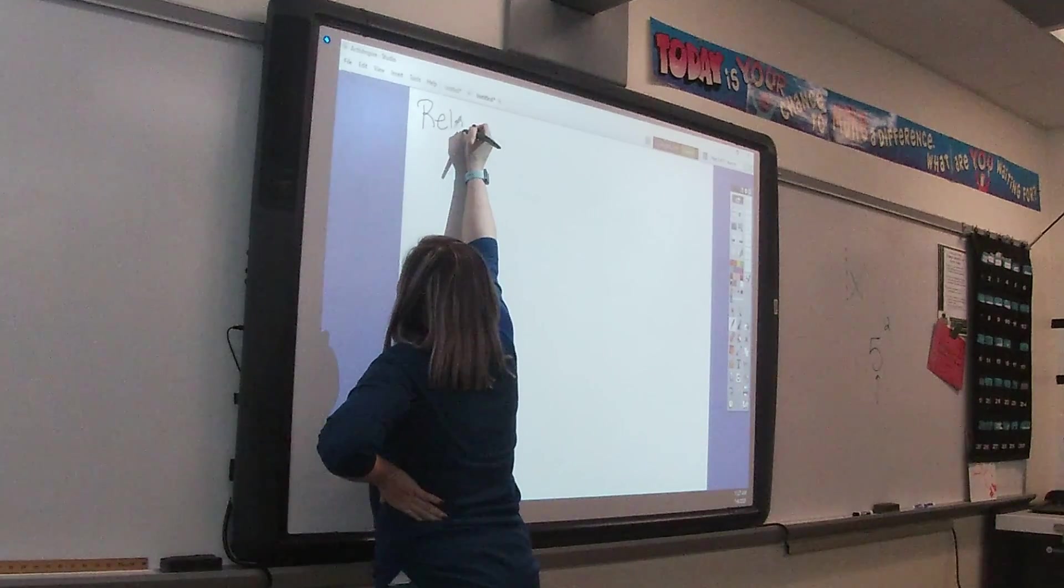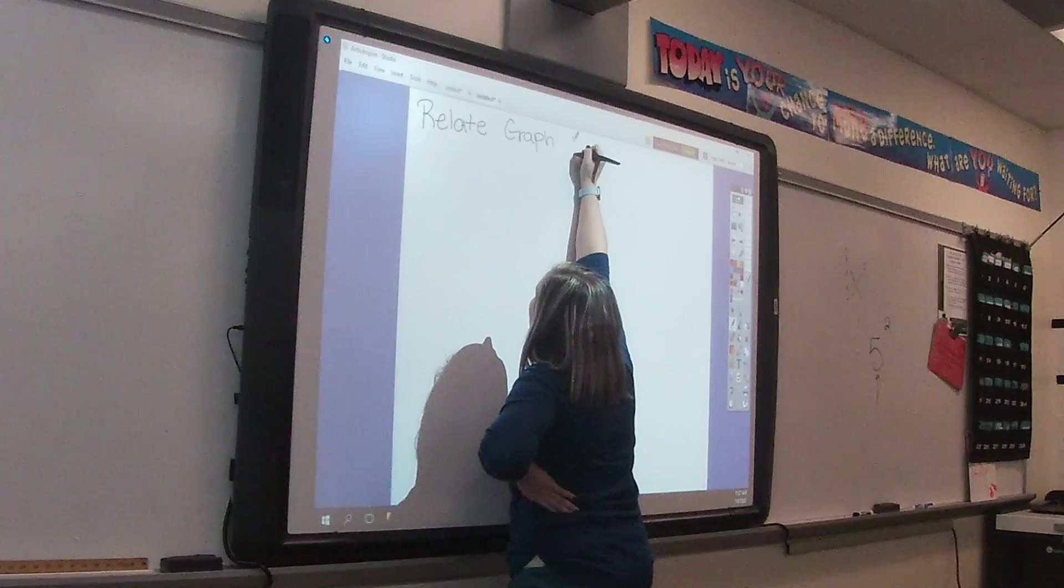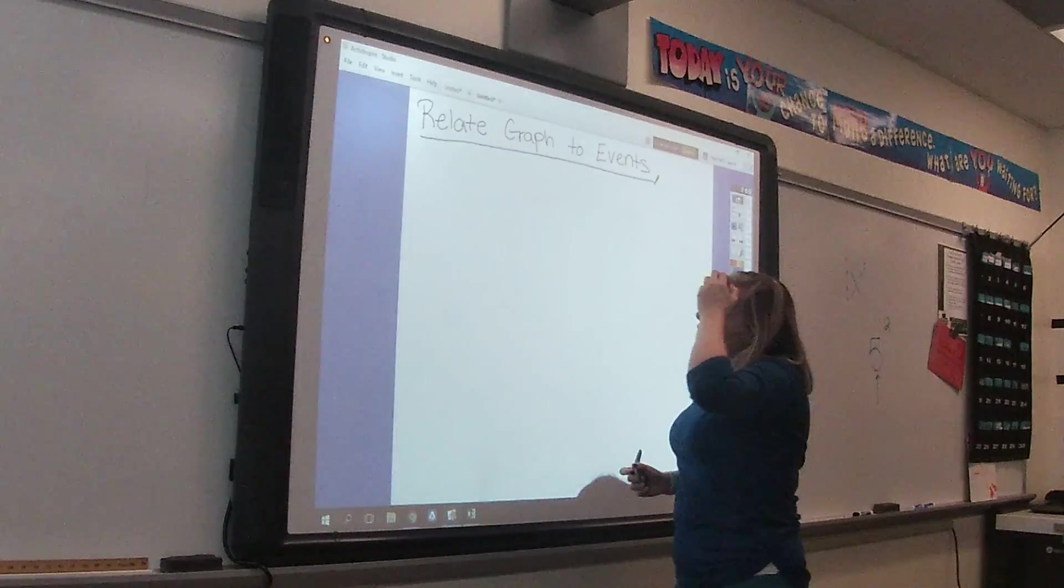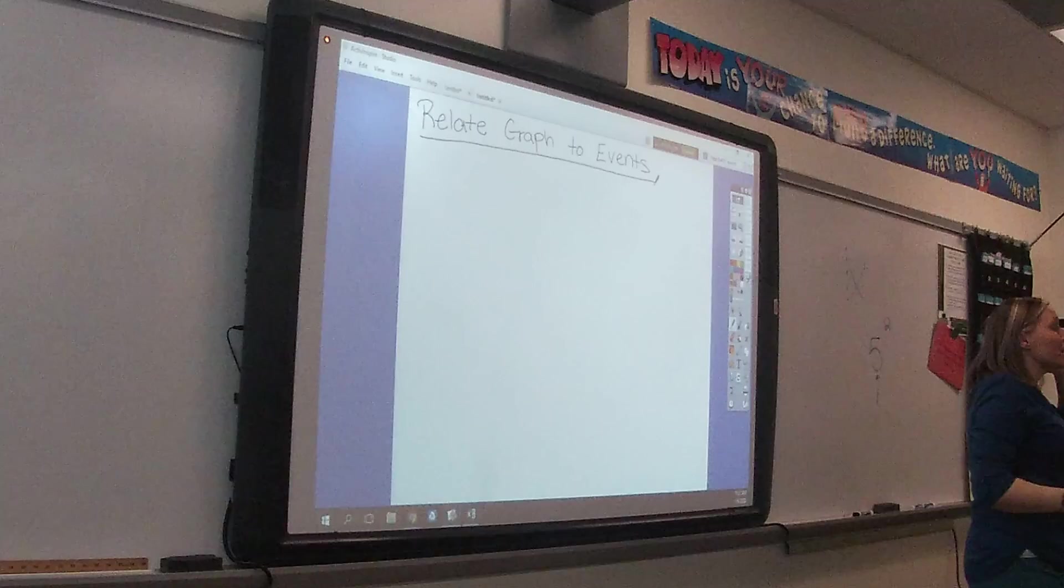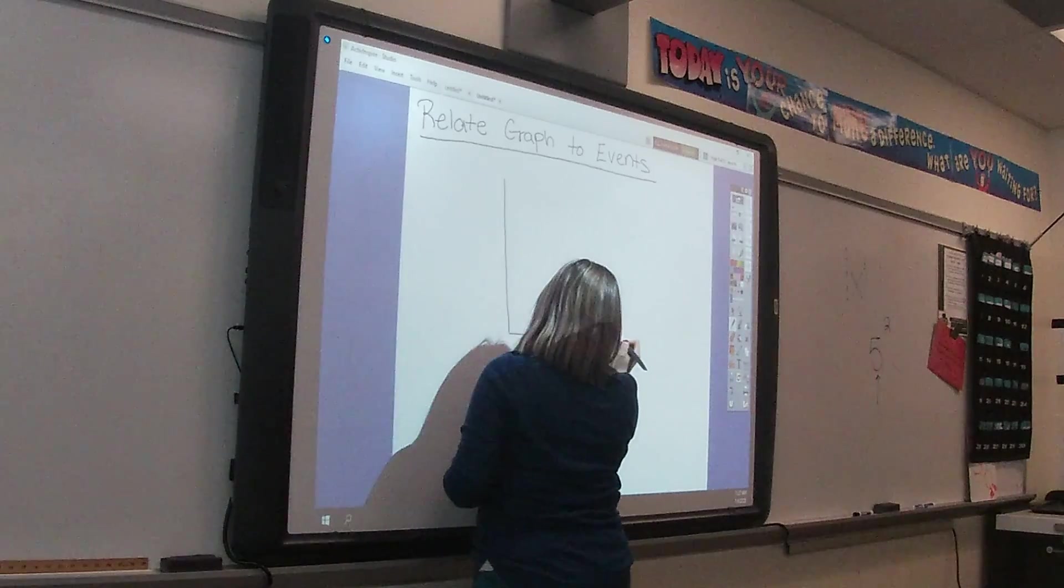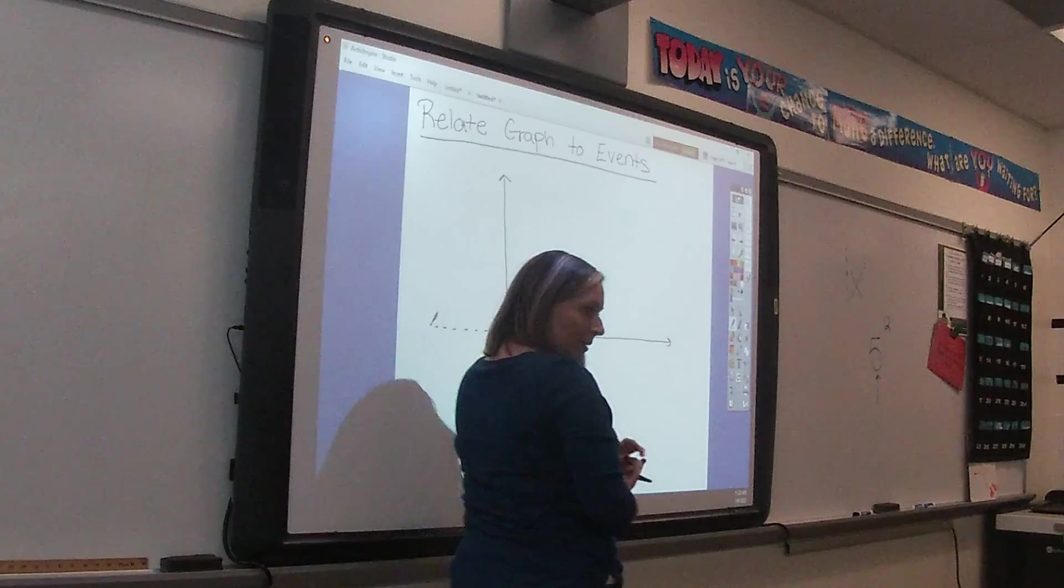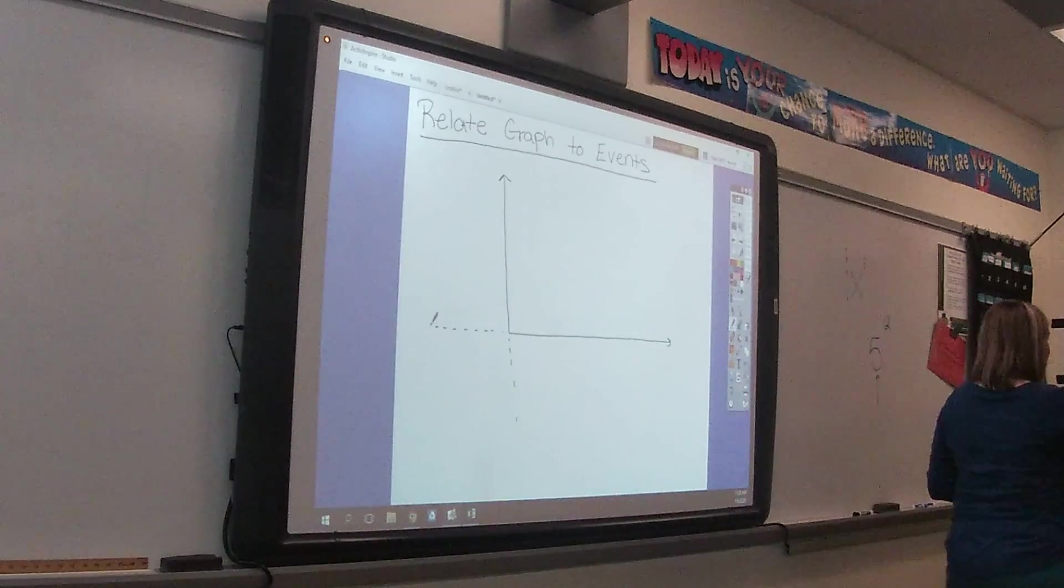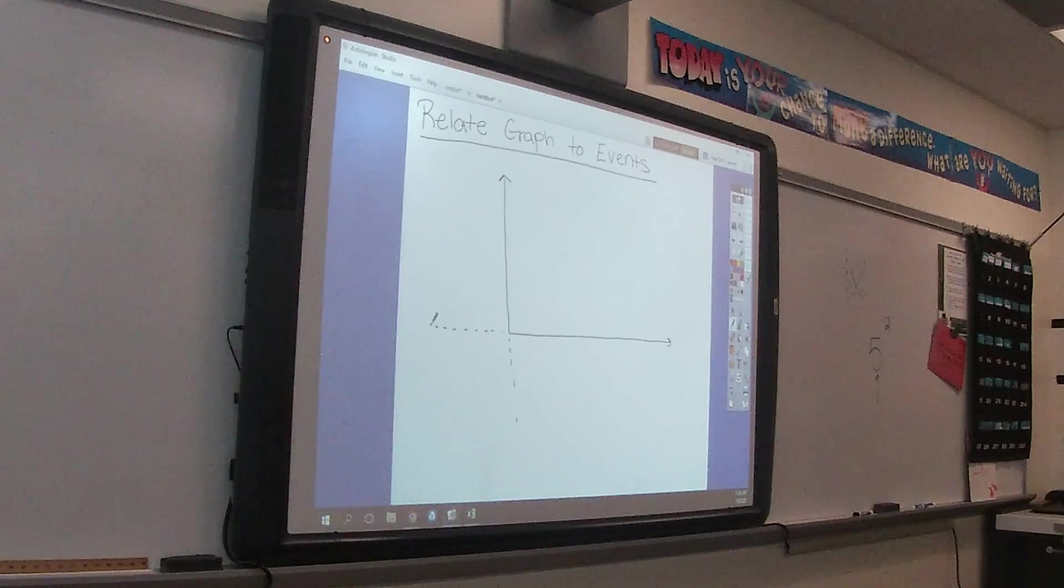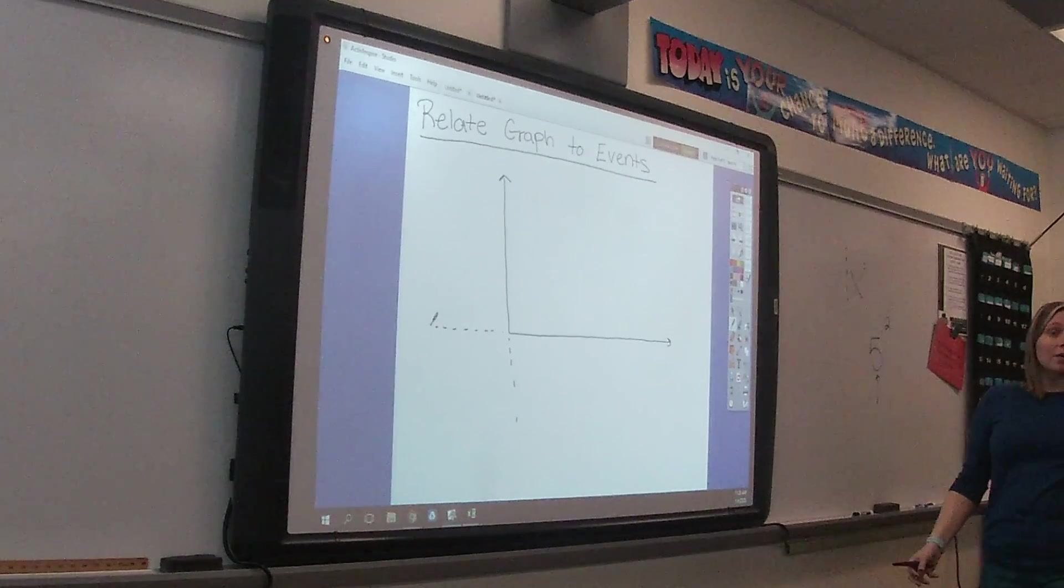When we are looking at relating graphs to events, there are some important key things that we need to know. We are almost always looking at a graph that happens inside quadrant one. Remember how before break we were talking about things being a reasonable domain and range? The majority of things that we look at are reasonable in quadrant one. Not always, but the majority of the time.